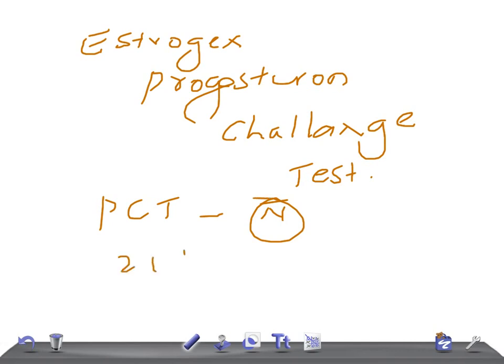We administer 21 days of oral estrogen followed by seven days of medroxyprogesterone acetate (MPA). In PCT, if beta HCG is negative and TSH and prolactin are normal, we administer a single dose of progesterone IM or seven days of oral medroxyprogesterone. If PCT is positive, it indicates anovulation. If negative, either estrogen is inadequate or there's outflow obstruction.